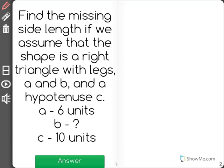Find the missing side length if we assume that the shape is a right triangle with legs A and B and the hypotenuse C. A is 6 units, B is what we're looking for, and C is 10 units.